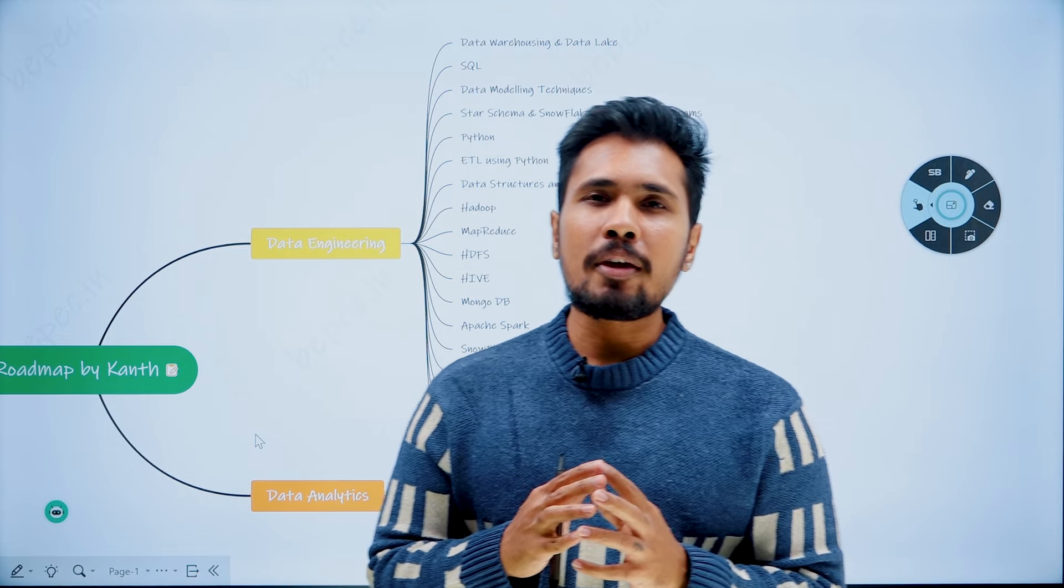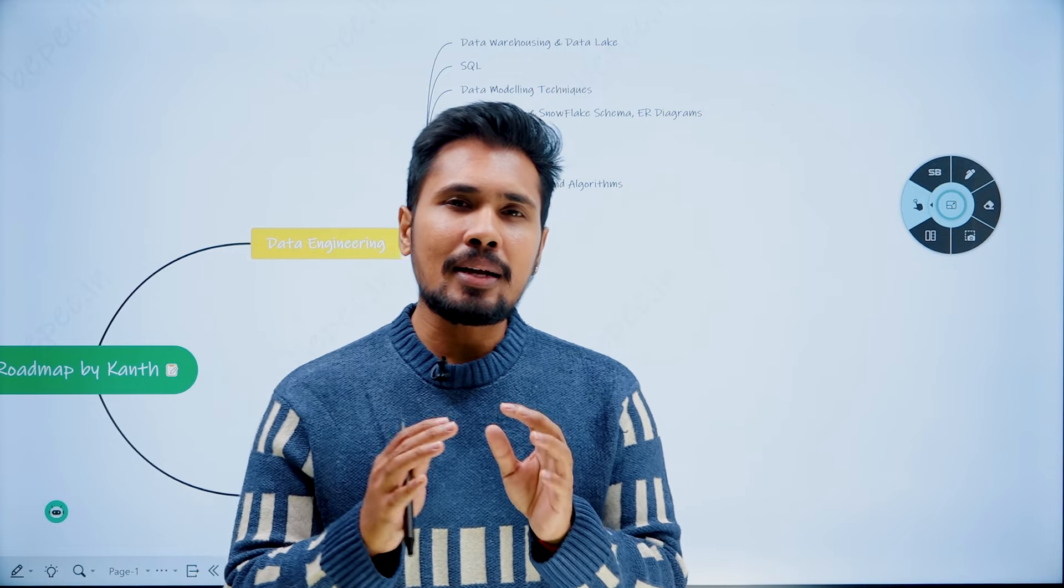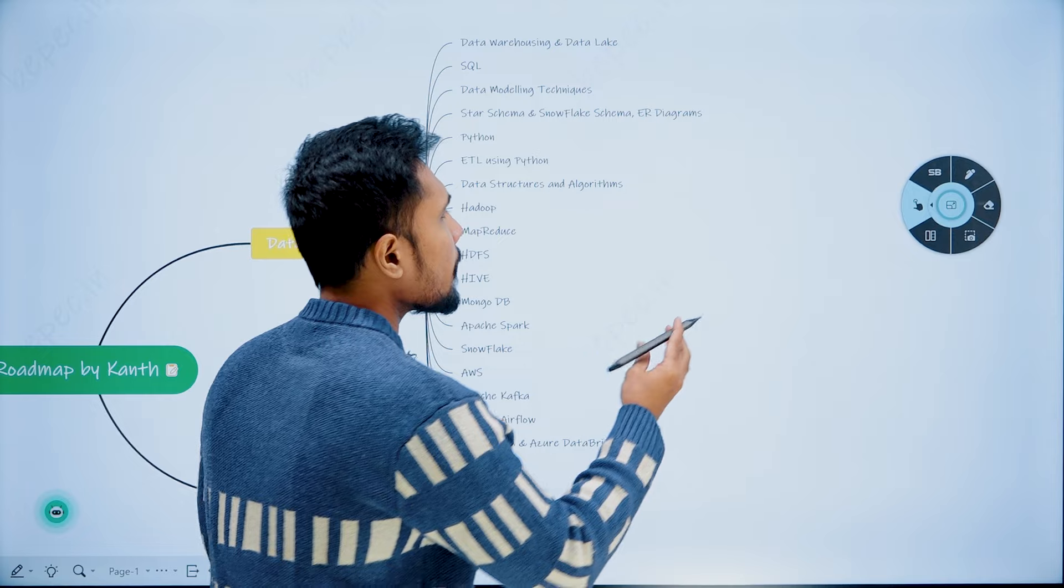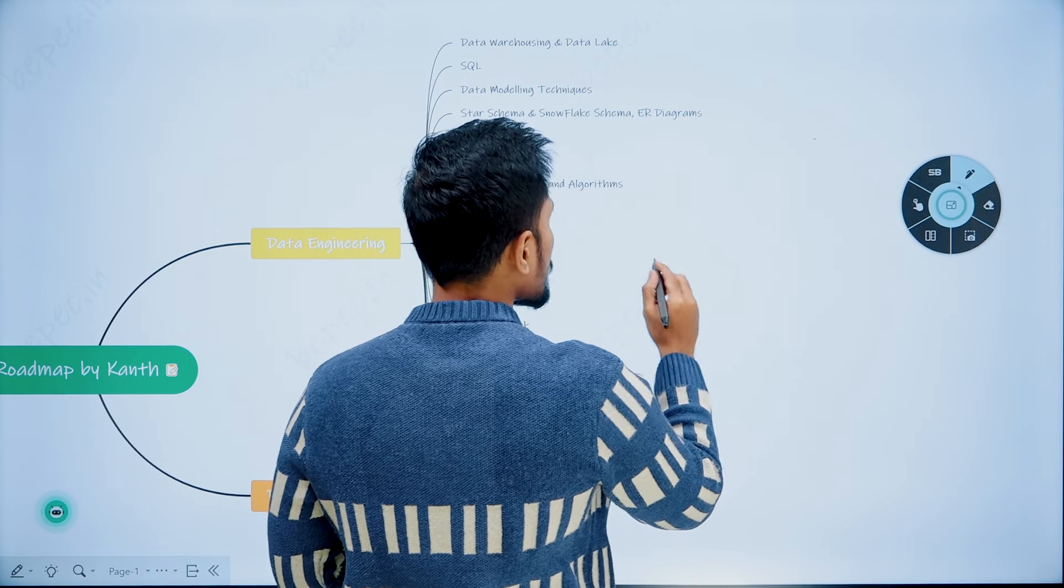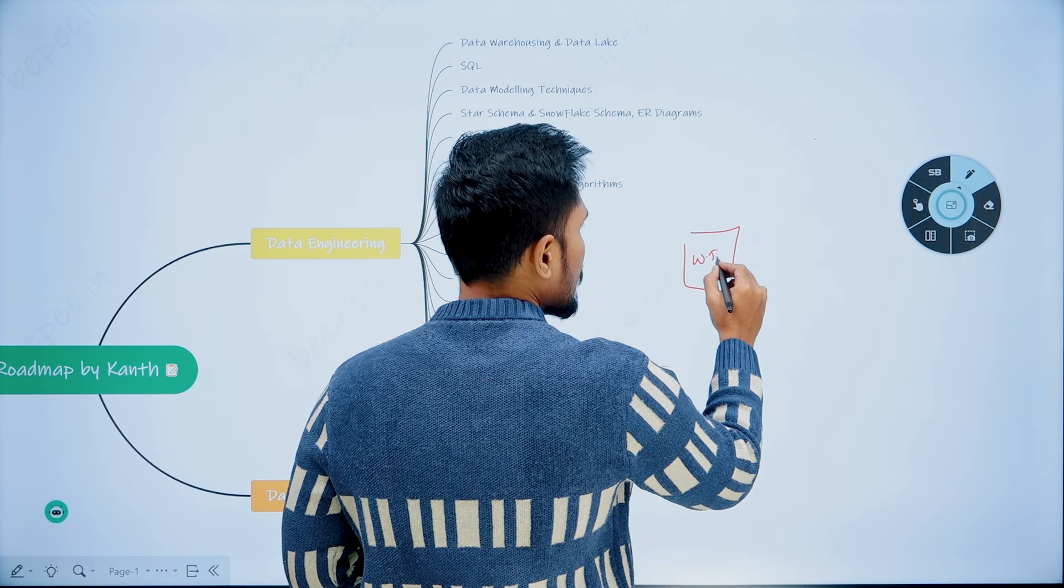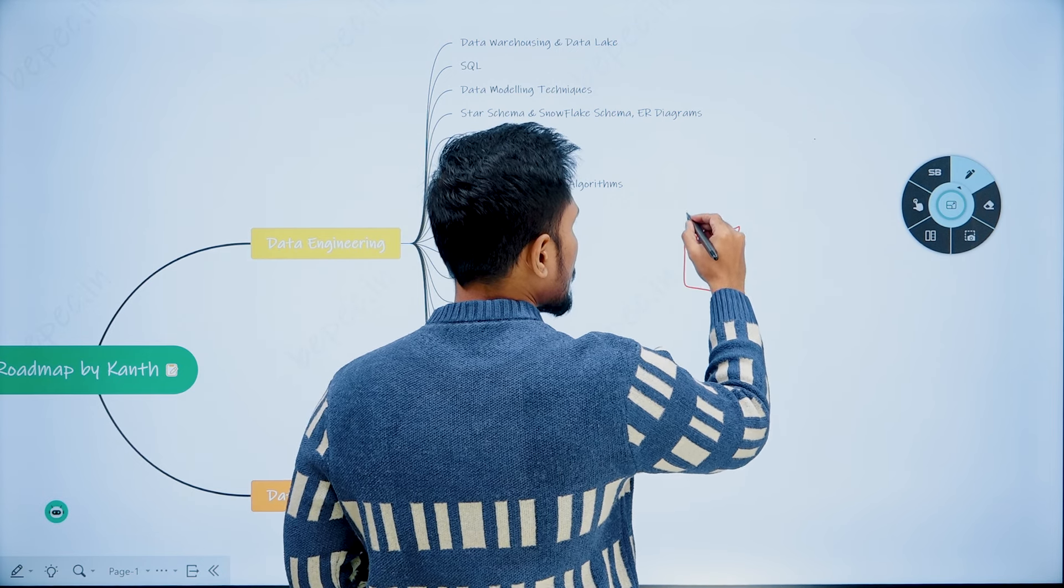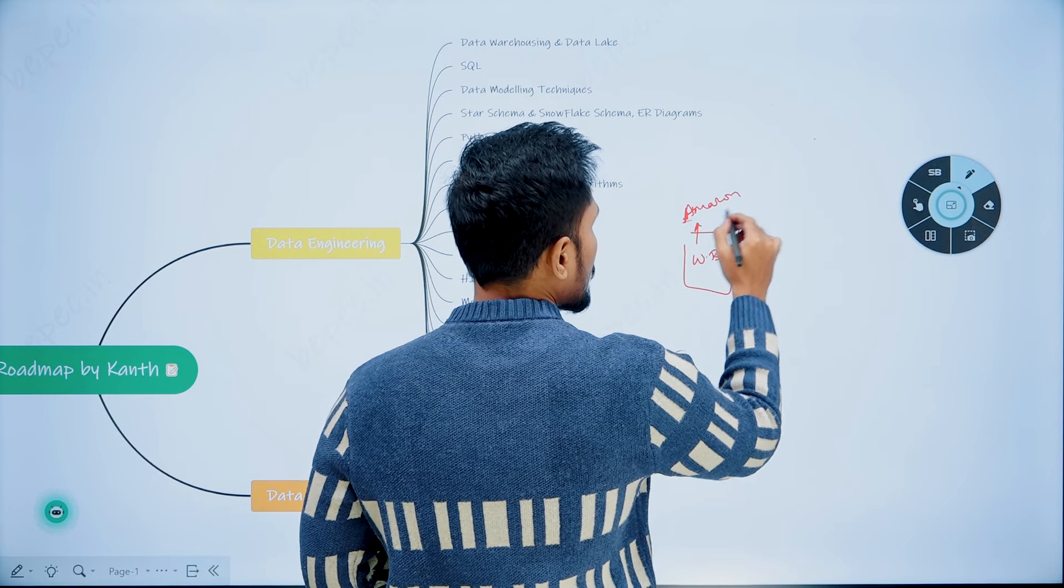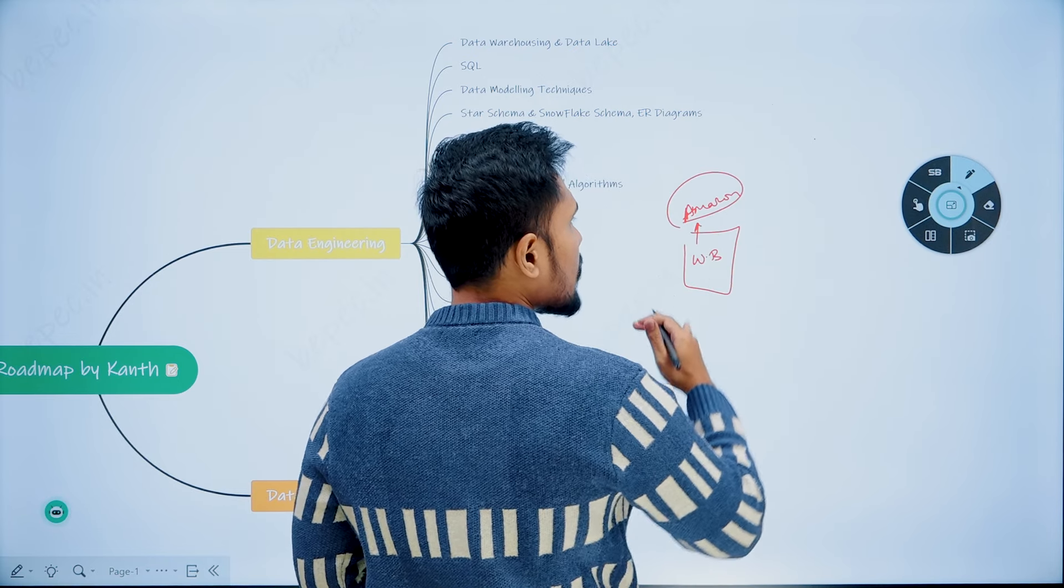So when we are going for a data engineer, what exactly is a data engineer's responsibility? Very simple. A data engineer's responsibility is to collect the data from multiple sources. What do you mean by multiple sources? For example, a website like Amazon. I need to collect the data from Amazon and store it.